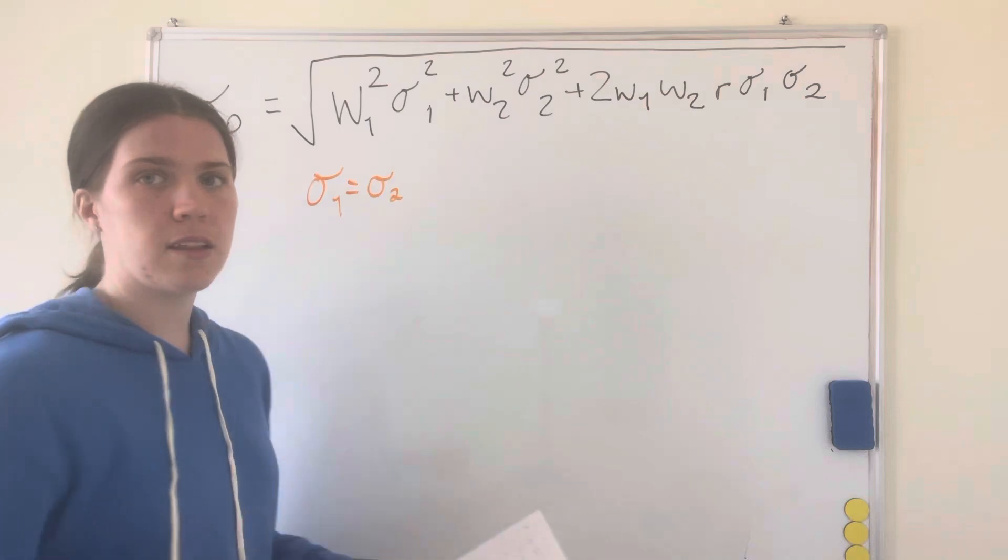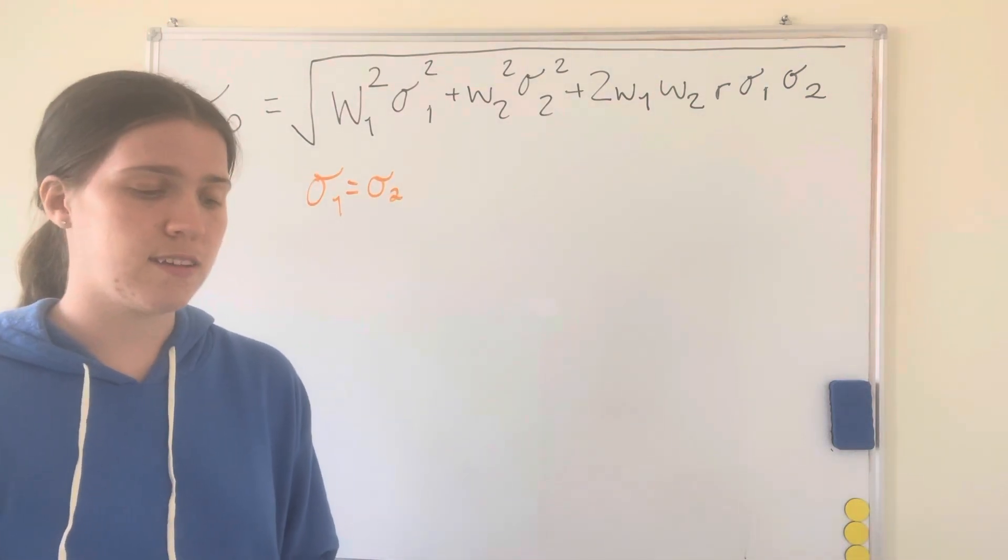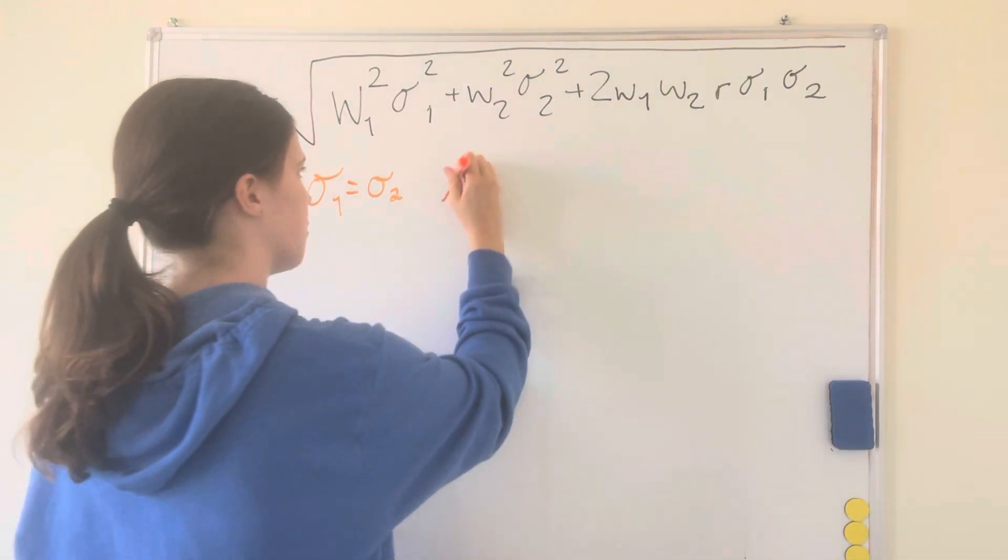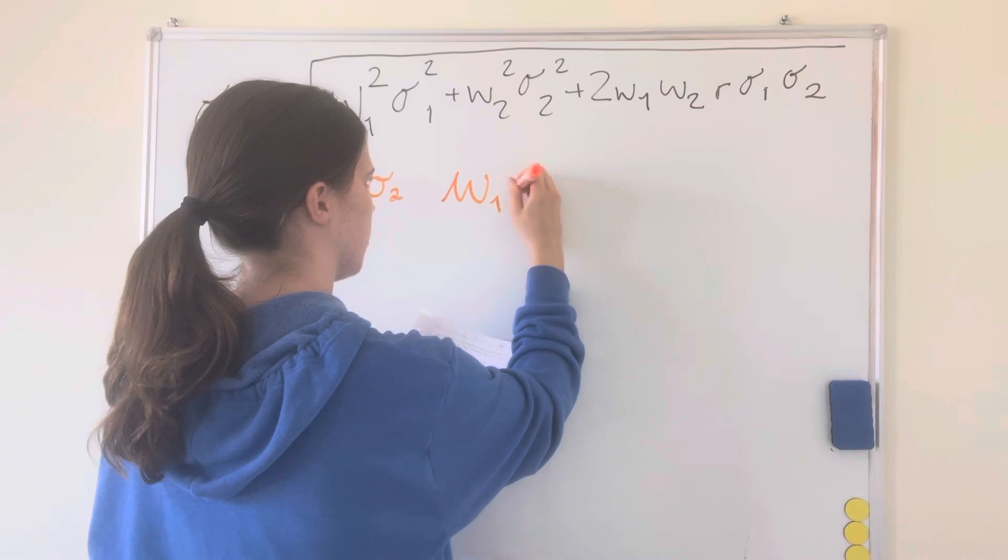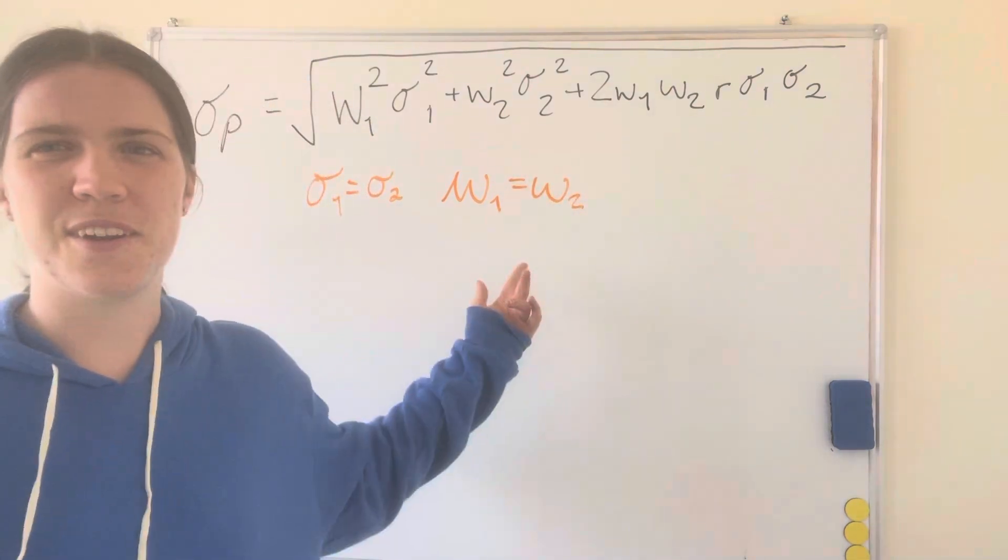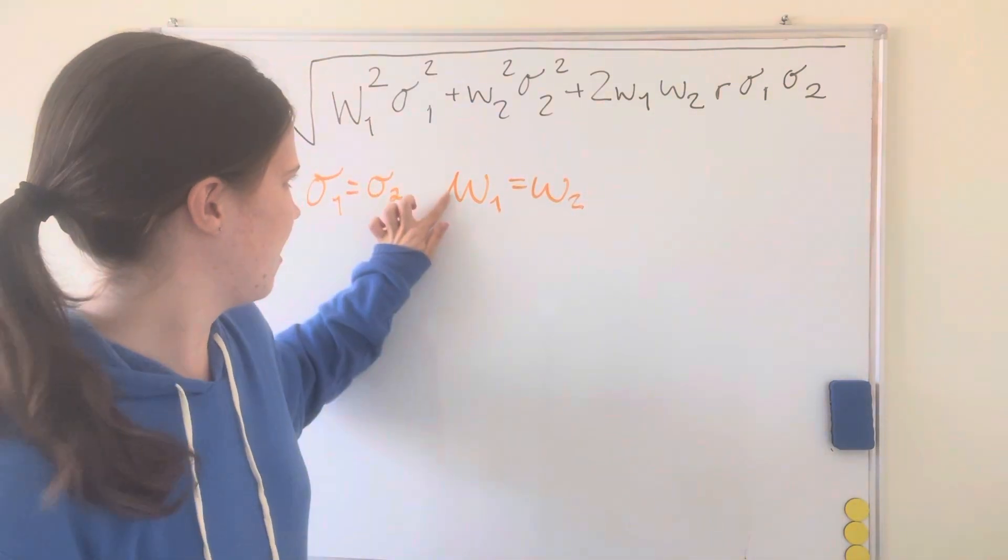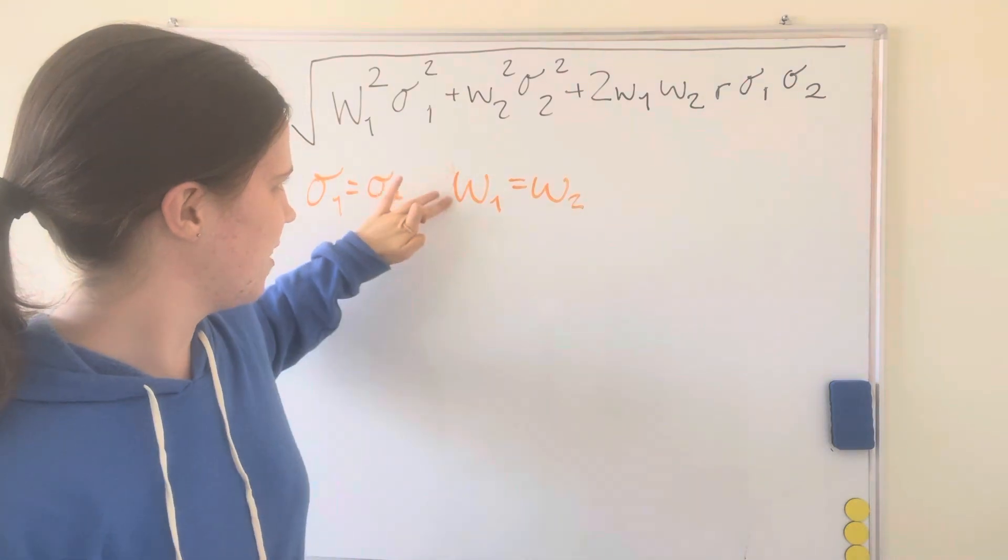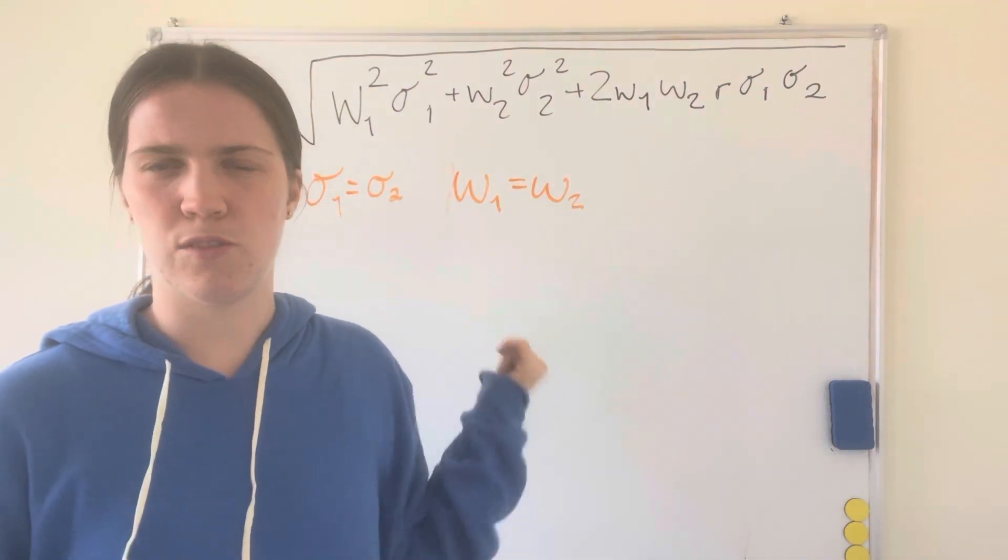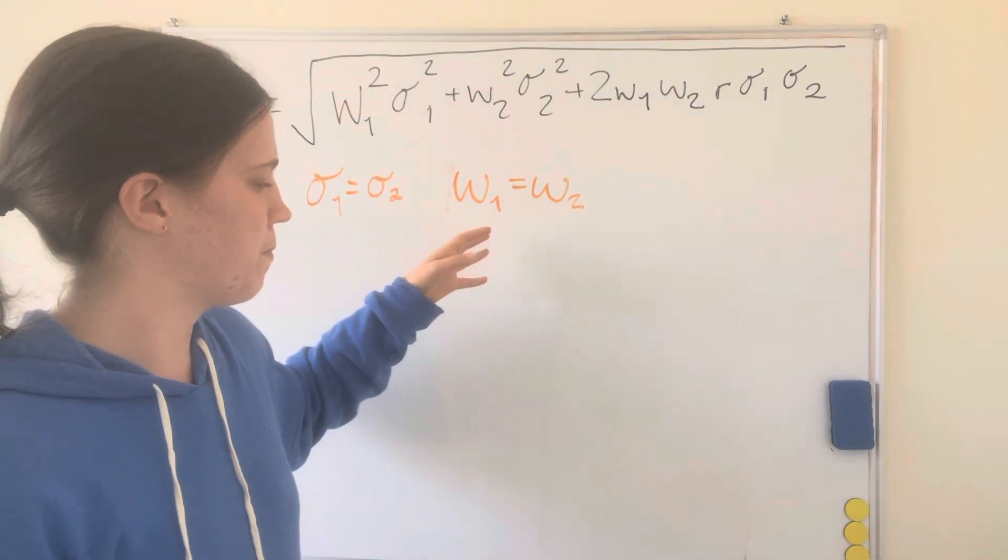And then w1 will also equal w2. This might be denoted by a Greek letter that I'm not sure how to pronounce, but I think it is a w because it stands for weight. So both your assets will be weighted the same.